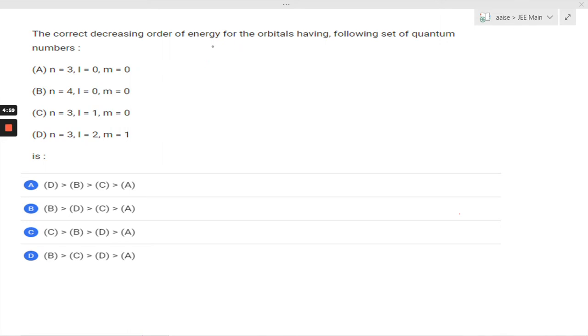Hello everyone, how are you all? So today we are having a question and this question reads like: the correct decreasing order of energy for the orbitals having following set of quantum numbers. Here we are having principal quantum numbers, azimuthal quantum numbers, and magnetic quantum numbers, and we need to arrange them in decreasing order of energy of the orbitals.